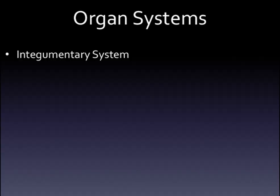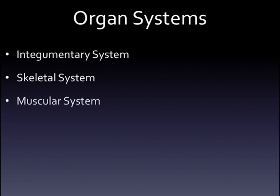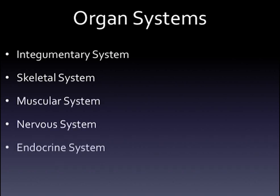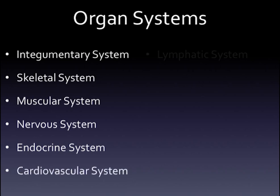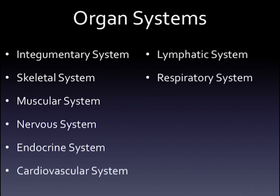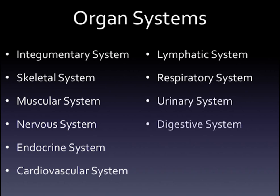We have the integumentary system, the skeletal system, the muscular system, the nervous system, the endocrine system, the cardiovascular system, the lymphatic system, the respiratory system, the urinary system, the digestive system, and the reproductive system.